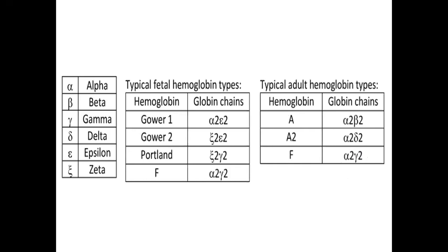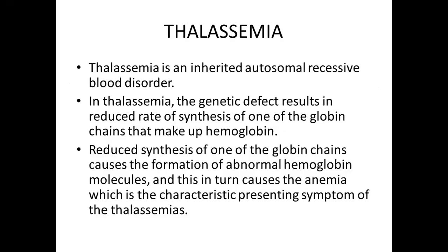These are the normal hemoglobin chains found in fetal life as well as in adults. Thalassemia is an inherited autosomal recessive blood disorder. In thalassemia, the genetic defect results in reduced synthesis of one of the globin chains that make up hemoglobin. This reduced synthesis causes the formation of abnormal hemoglobin molecules.